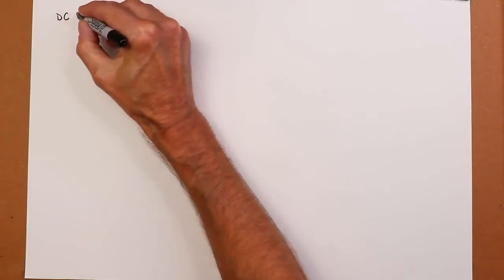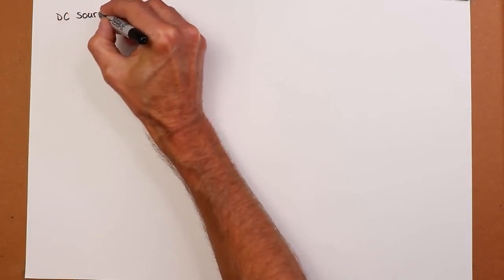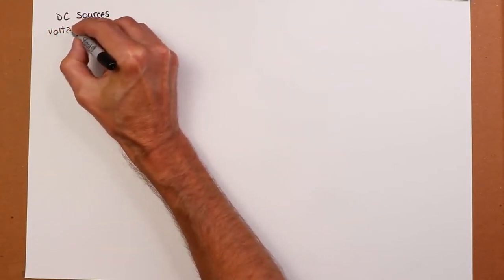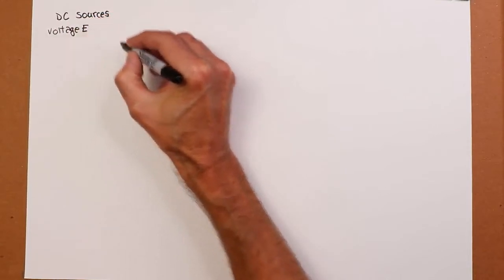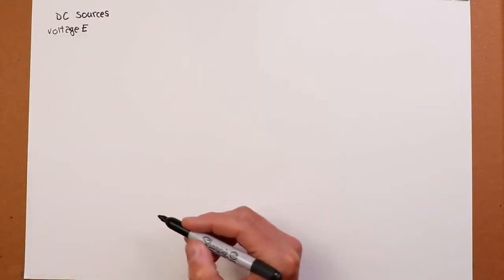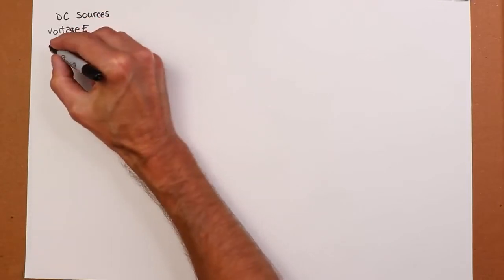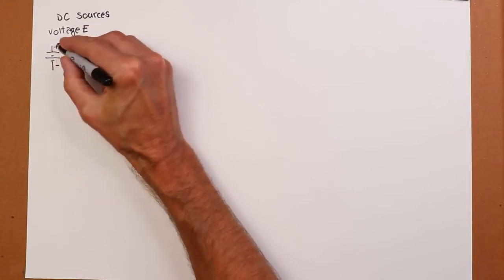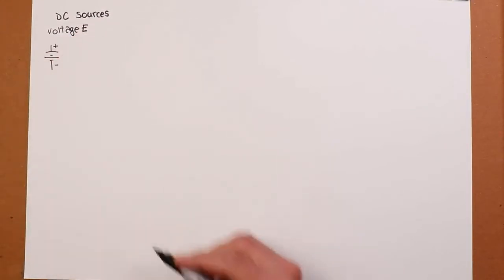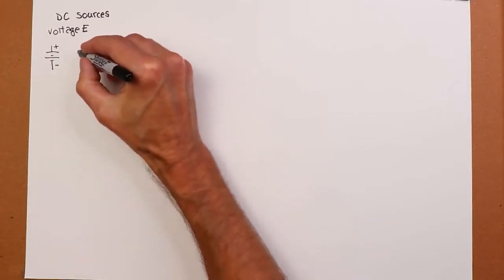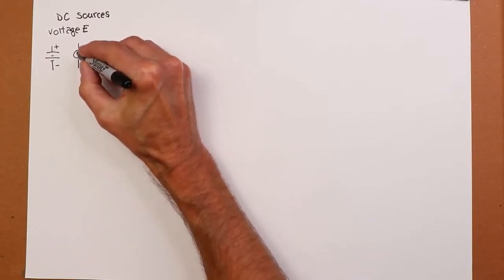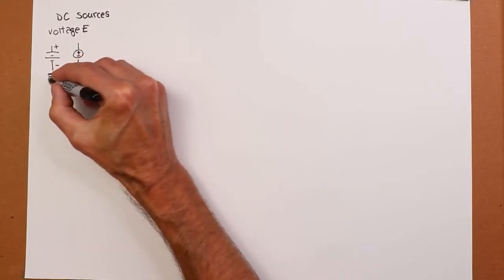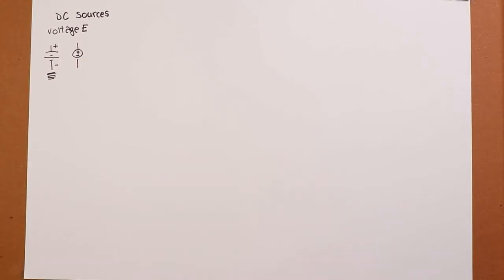DC sources. If we're going to look at a voltage source, usually these are denoted with a capital E, E for electromotive force. There's two symbols. Probably the more common is this one, and the plus and minus indicate the polarity, positive to negative. Sometimes you'll see them drawn as a circle with a plus and a minus inside, but this one is definitely the more common one that we'll see.